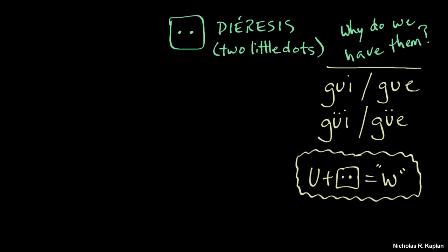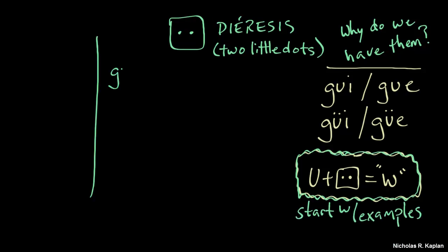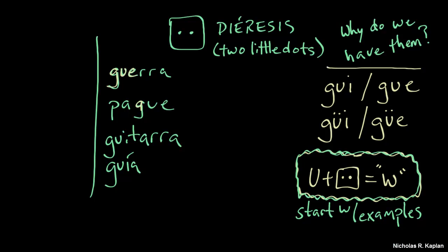You're like, Maestro, how do I pronounce those syllables? I don't really know. Well, let's always go back to words that you know. Alright, so you know these words, right? Guerra. Pague. Guitarra. Guia. So anytime you're trying to figure out how to pronounce something, go back to a word that you know.